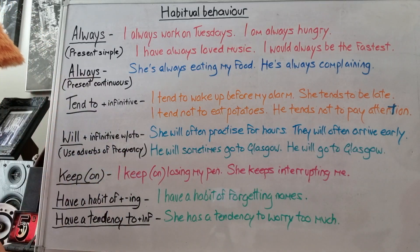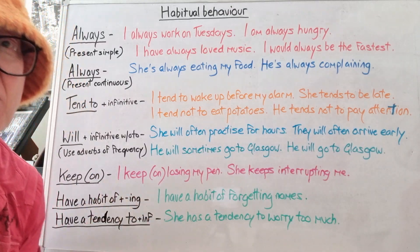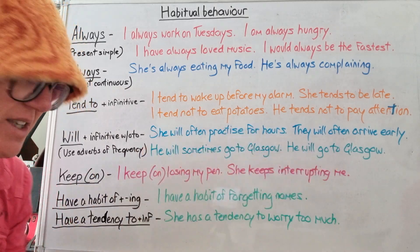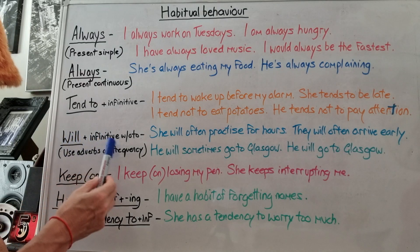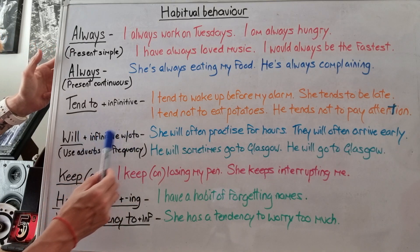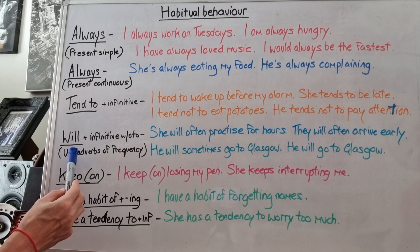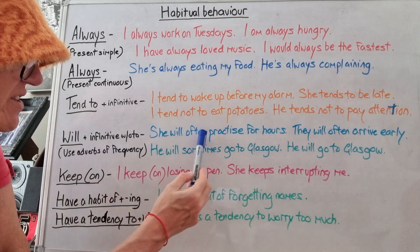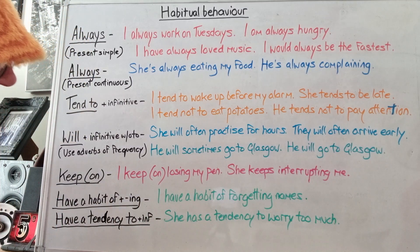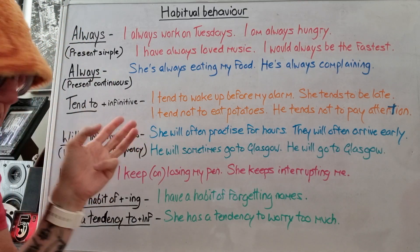Here's something quite strange for some people: 'will'. When you hear 'will', you think of the future, right? But we use 'will' plus the infinitive without 'to' to talk about present habits with adverbs of frequency. She will often practice for hours — that means you could just say she often practices, but some people use 'will' to talk about present habits. This is only present, though.